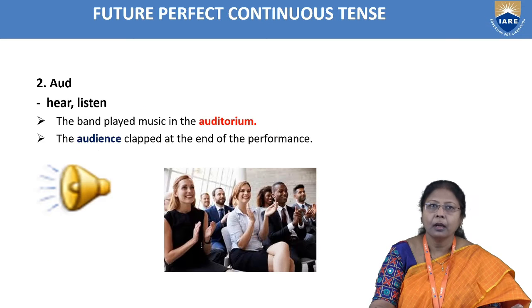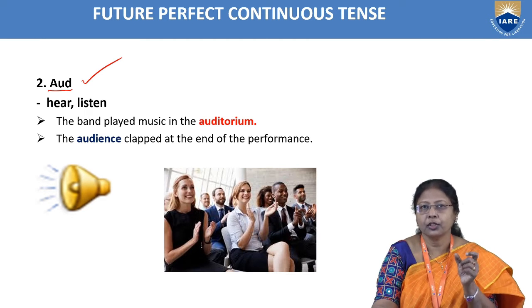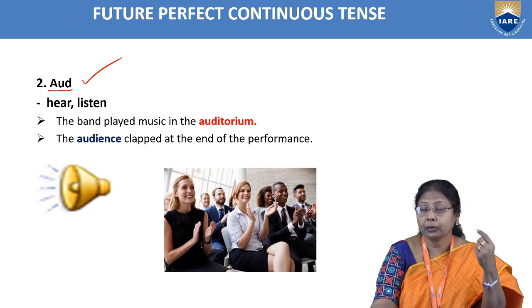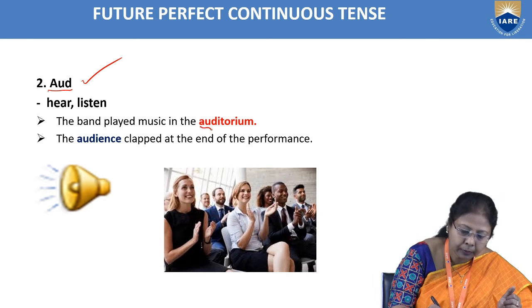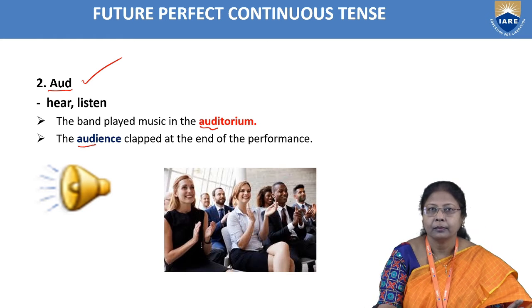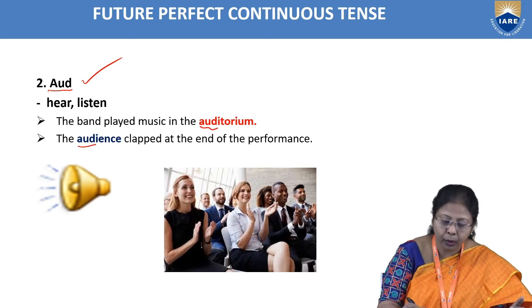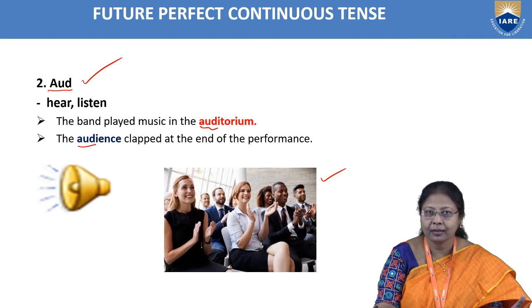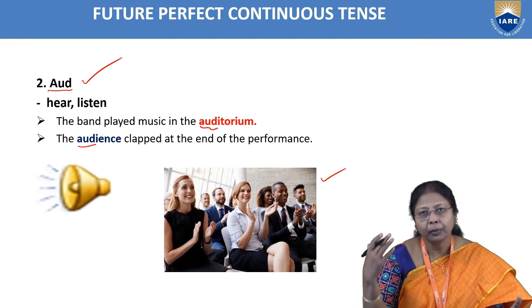The next root word is 'aud' (A-U-D), meaning 'hear' or 'listen.' Words formed from this root include 'auditorium' and 'audience.' For example: 'A band played music in the auditorium' and 'the audience clapped at the end of the performance.' So the root word 'aud' is the main word which gives meaning to either the prefix or suffix added to it.